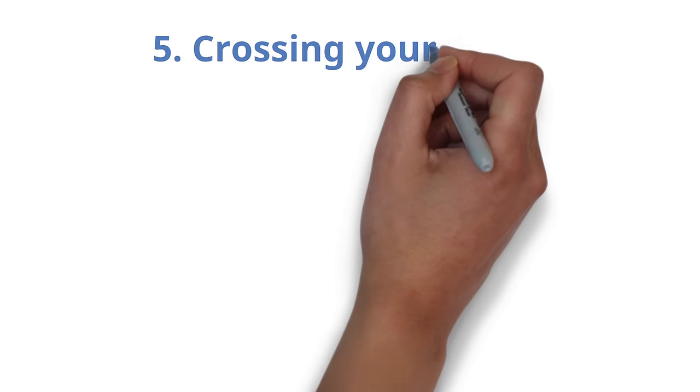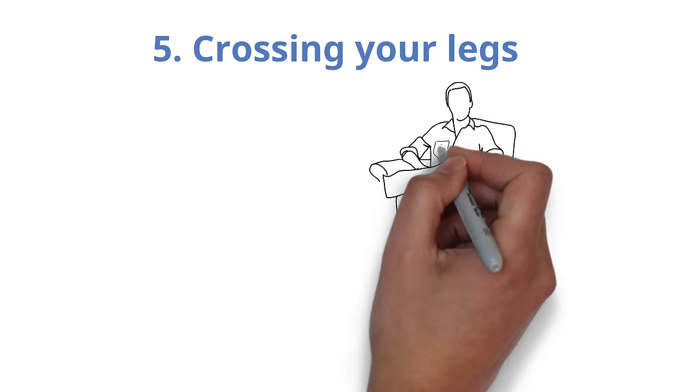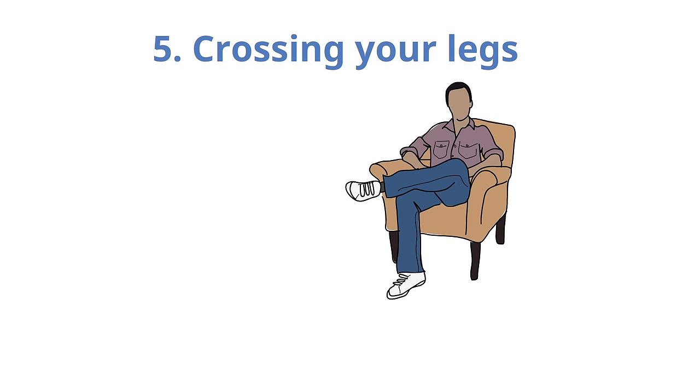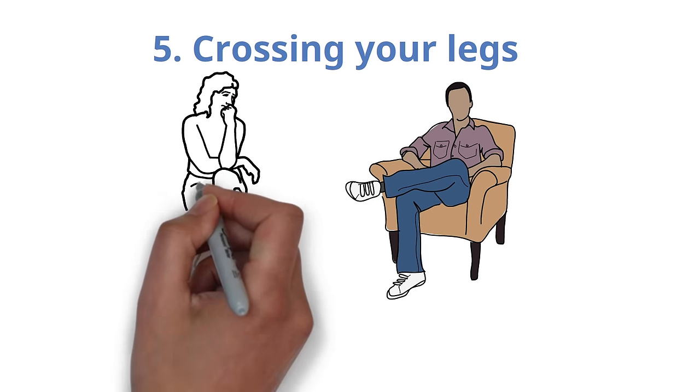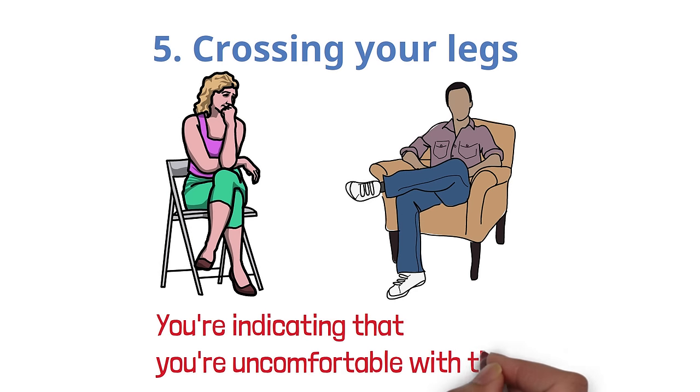Number 5. Crossing your legs. If you cross your ankles, it may appear as if you're attempting to conceal something. If you cross your knees but aim them away from the other person, you're indicating that you're uncomfortable with them.